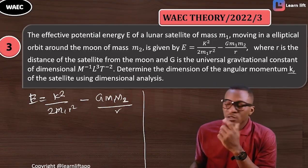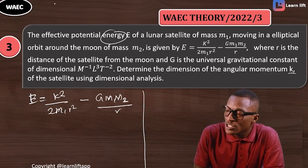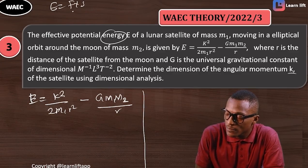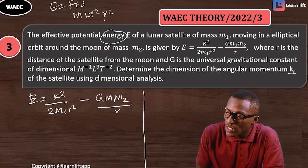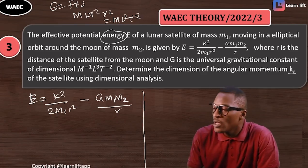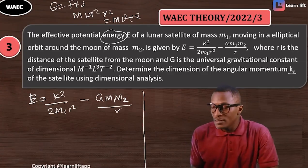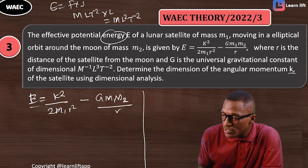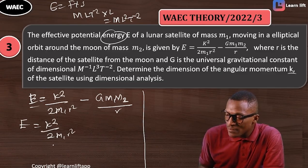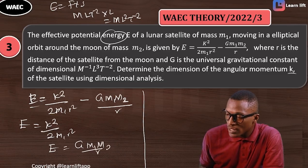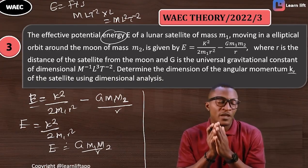First, E is energy. The dimension of energy equals force times distance. Force is mass times acceleration, which is MLT⁻², and distance is L, giving ML²T⁻². Now, E = k²/(2m₁r²). We can equate this to find k. Also, E = Gm₁m₂/r. You can equate E to both expressions.